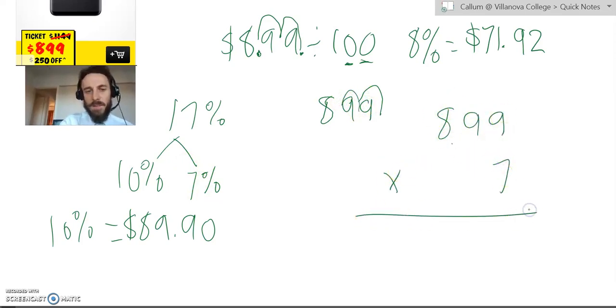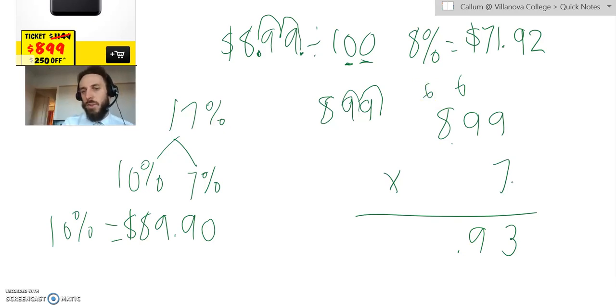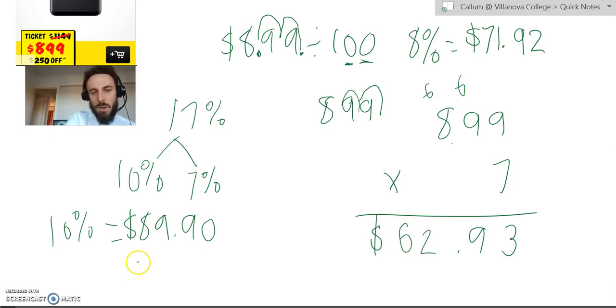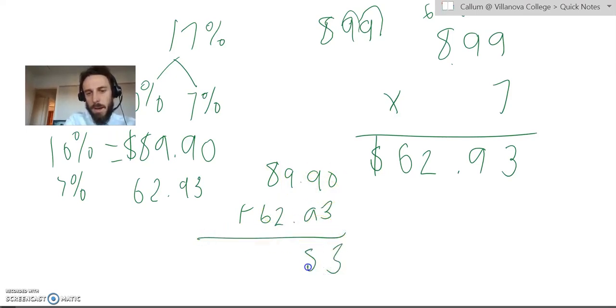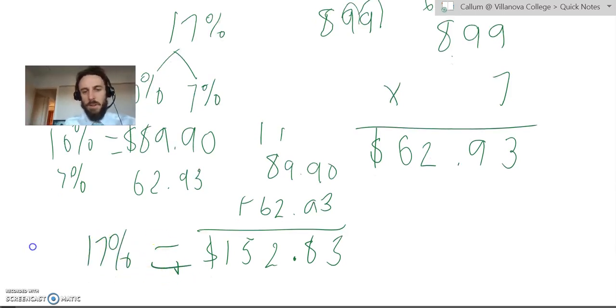And if we multiply that by 7, then we'll have the 7%. And we'll just add those numbers together. Because I love doing math, so I'm just going to do it. 9 times 7 is 63. Regroup the 6. 9 times 7 is 63. And 6 and 9 and 6 is 69. Regroup the 6. 8 times 7. I always forget. I think it's 56. Plus 6 is going to get us to 62. So 7% is $62 and 93 cents. That's 7%. And if we add those two together, 3 and 0 is 3. 9 and 9 is 18. Carry the 1. Put the decimal down. 9 and 2 and 1 is 12. 8 and 6 is 14. And 1 is 15. 17% is equal to $152.83.